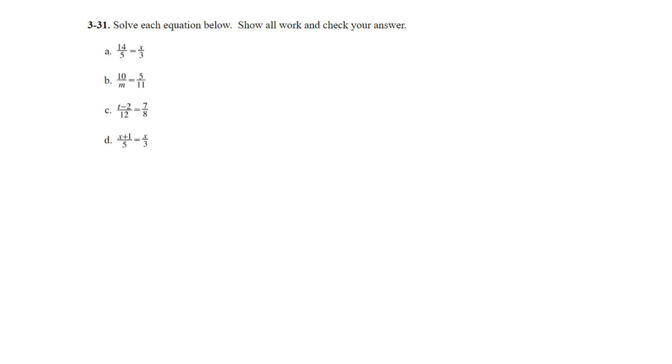Question 31, solve each equation below. Show all work and check your answer. On part a, we have 14/5 = x/3. We can multiply both sides by 3 to get rid of the 3 in the denominator. That will give us 14 times 3 divided by 5, and that would be x = 8.4. To check this, we plug this in: 14/5 is equal to 8.4 divided by 3. One way we can do this is just change them into decimals. This would be 2.8, and then 8.4 divided by 3 should also get 2.8. So that's how we can check it.